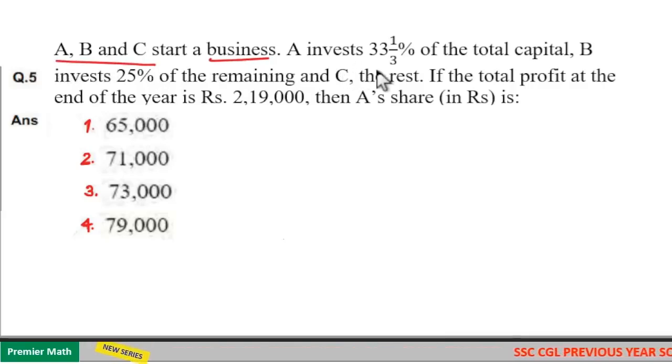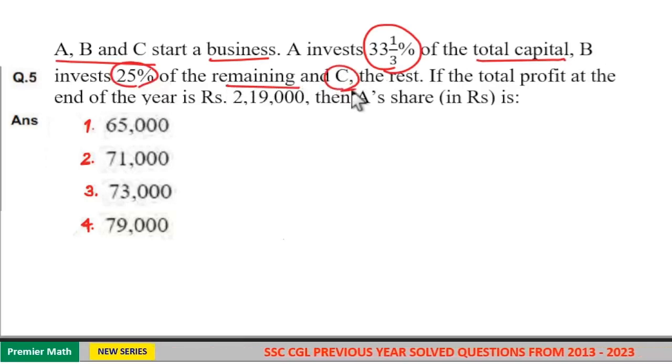A, B and C start a business. A invests 33 and 1/3 percentage of the total capital, B invests 25 percentage of the remaining and C the rest. If the total profit at the end of the year is rupees 2,19,000, then A's share is what we need to find.